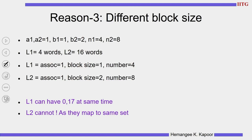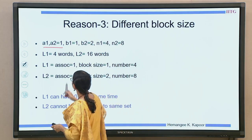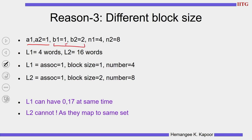The third reason is different block sizes. Using both caches as direct map — the previous problems came from set associativity, but now even with direct map, different block sizes cause the same problem. Here L2 has block size 2 (housing two addresses per block) while L1 has block size 1. L2 is bigger — 16 words versus L1's 4. If L1 has addresses 0 and 17 at the same time (in different sets), L2 may not be able to keep both since they may map to the same block position.